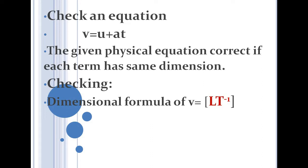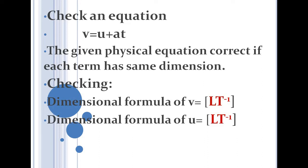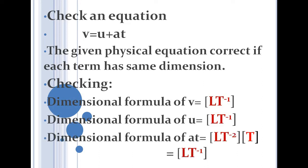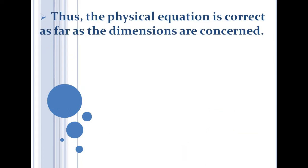The dimensional formula of v is LT⁻¹, as we discussed in the first lecture. Similarly, u is the initial velocity, so its dimension is also LT⁻¹. For the term a×t, acceleration has dimension LT⁻² and time has dimension T, so one T cancels and the dimensional formula of a×t is LT⁻¹. All three terms — v, u, and a×t — have the same dimension LT⁻¹, so the given physical equation v = u + at is dimensionally correct.